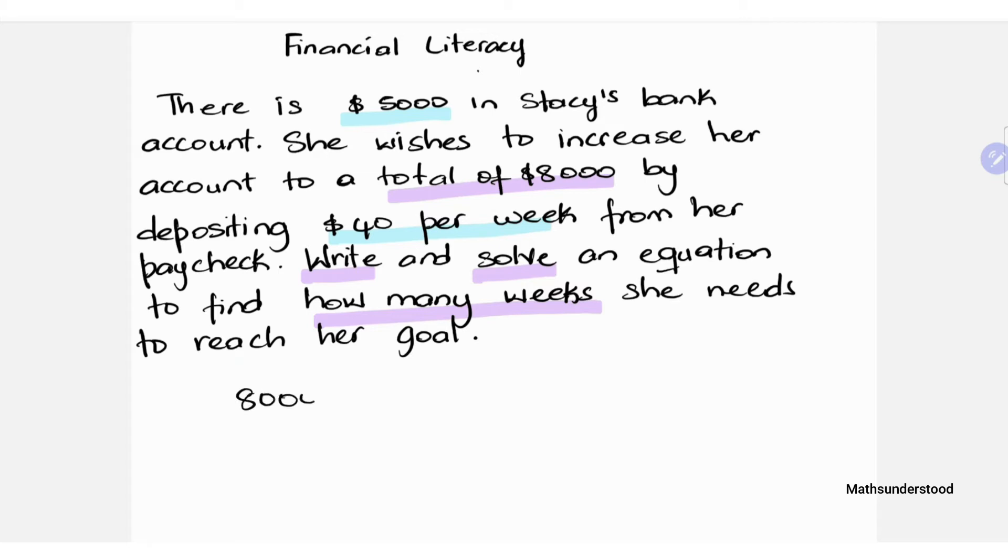So that's 8,000, which is the total that she wants to increase to, should be equal to the $5,000 which she already has plus that $40 that she intends to deposit each week times however many weeks she will deposit it for.